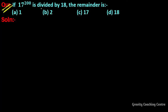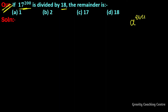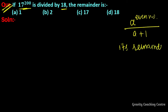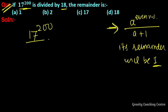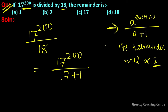Question: if 17 to the power 200 is divided by 18, the remainder is? If the expression is in the form a to the power even number upon a plus 1, then its remainder will be 1. So if the expression is in the form a to the power 200 upon 18, that is 17 to the power 200 upon 17 plus 1, and 200 is an even number, then in case of even number the remainder is 1.